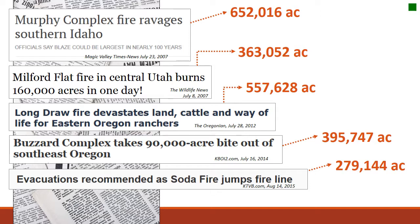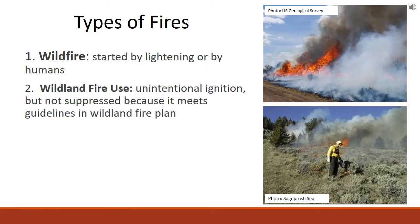A lot of times when we think about range management we think about these areas that are burning and we try to think about strategies to reduce the probability that these areas are going to burn or that the scale is going to be as large. We also think about how we can get our ecosystem back to functioning — to support wildlife habitats, livestock grazing, and those kinds of factors. Another type of fire is wildland fire use: an unintentionally ignited fire that won't be suppressed because it meets the guidelines of the wildland fire plan, representing a shift from complete suppression.